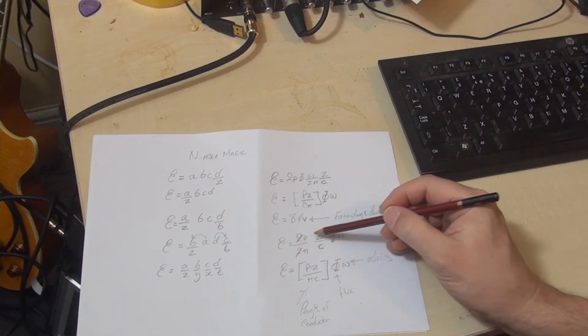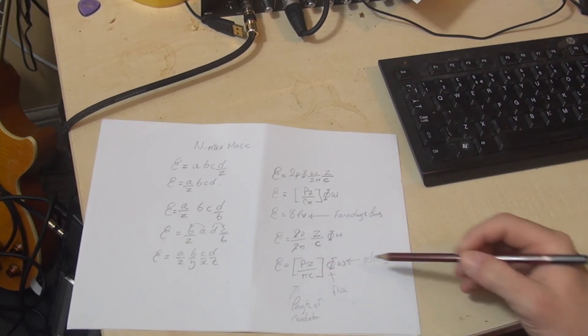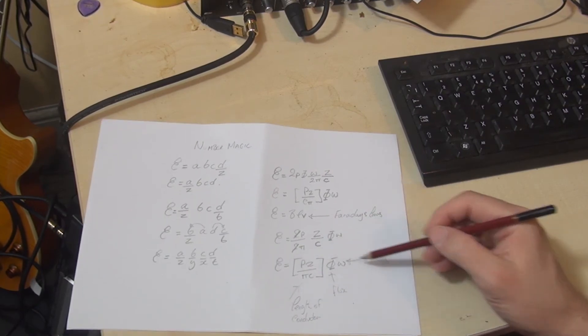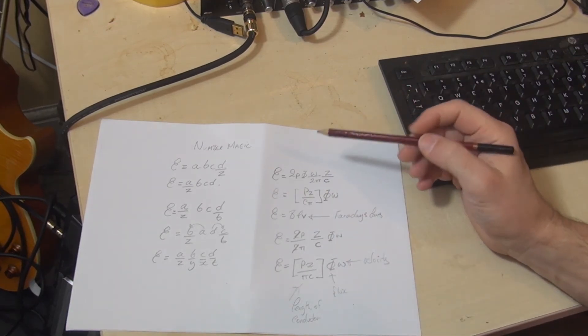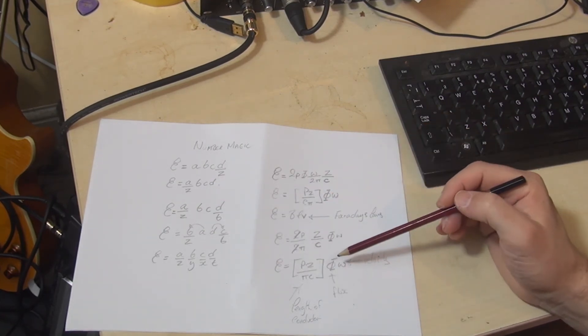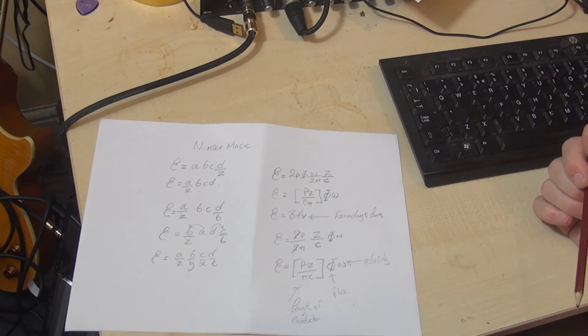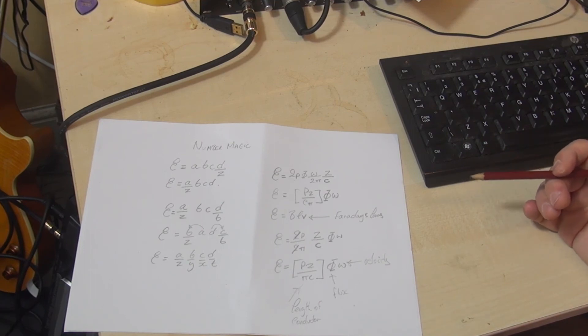And then we can gather these terms into a fraction. P times Z over pi times C, put that in brackets, multiply it by the flux and the radians. And that's just a very, very simple example of how you can use these type of techniques to simplify, remove terms and group terms to make an equation easier to use, which is actually the goal of mathematics overall.